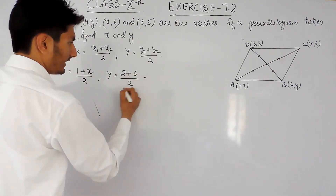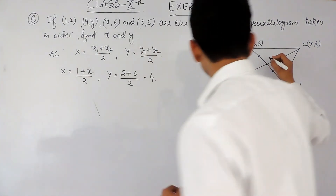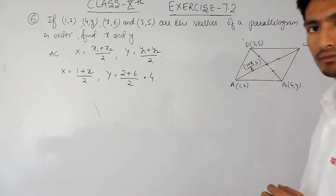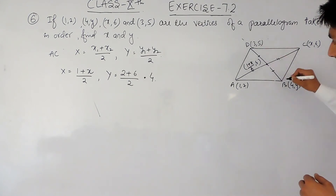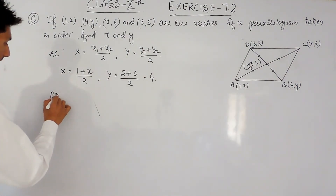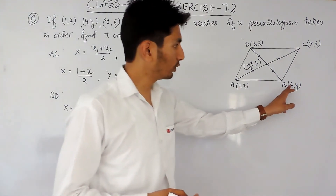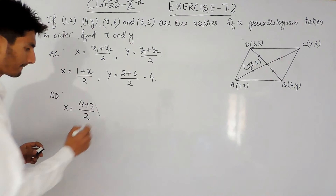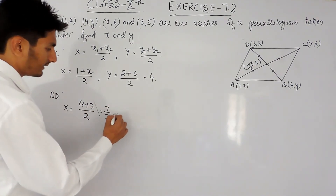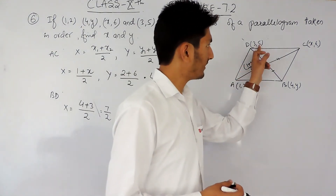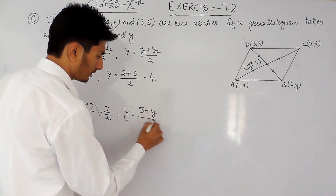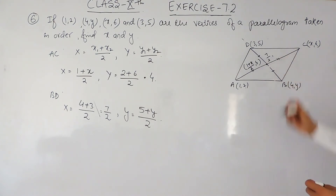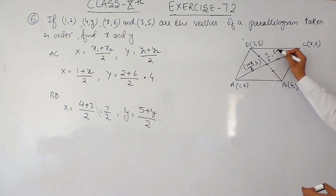Solving (2 + 6) / 2 gives 8/2 = 4. So the coordinate of the midpoint of AC is ((1 + x) / 2, 4). Similarly, finding the midpoint for BD: the x-coordinate is (4 + 3) / 2 = 7/2. For the y-coordinate, it will be (5 + y) / 2. So the coordinates of the midpoint of BD are (7/2, (5 + y) / 2).